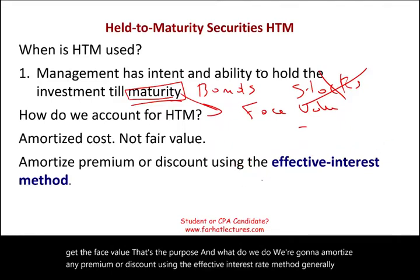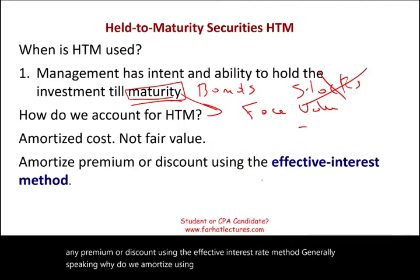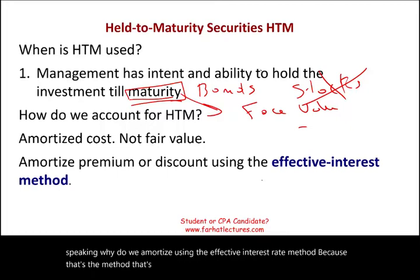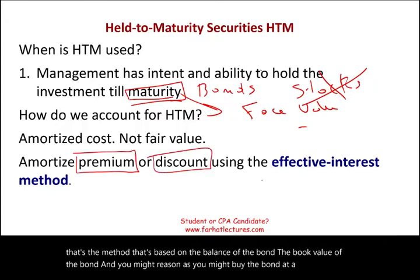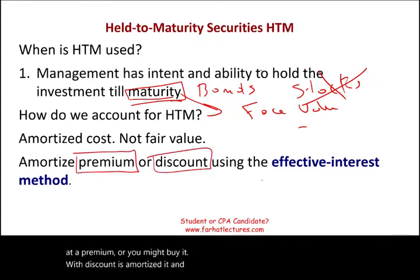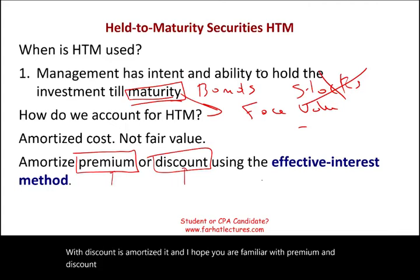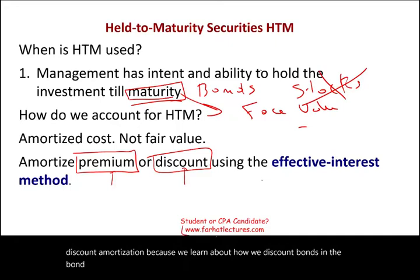Why do we amortize using the effective interest rate method? Because that's the method based on the balance of the bond — the book value of the bond. You might buy the bond at a premium or at a discount; just amortize it. I hope you are familiar with premium and discount amortization, because we cover that in the bond section. If not, please go to Farhat Lectures to see how we do so.